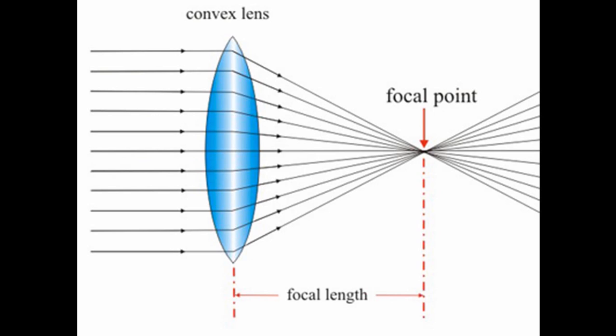And at the focal point all these beams of light that are parallel they all converge down into a single point after they've gone through the lens.